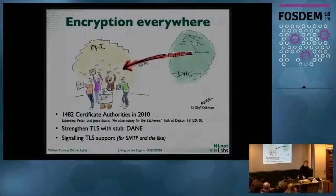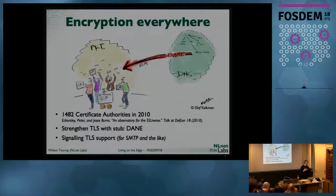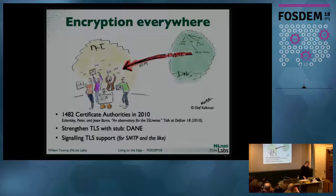There's one certificate authority I really like — Let's Encrypt. They hand out certificates for free. But it doesn't matter how much you trust your certificate authority, because all the others are also able to vouch for your name and can interfere with your TLS connection. DNSSEC has a means to deal with that: you publish in your domain name a hash of the public key used for your TLS encryption.